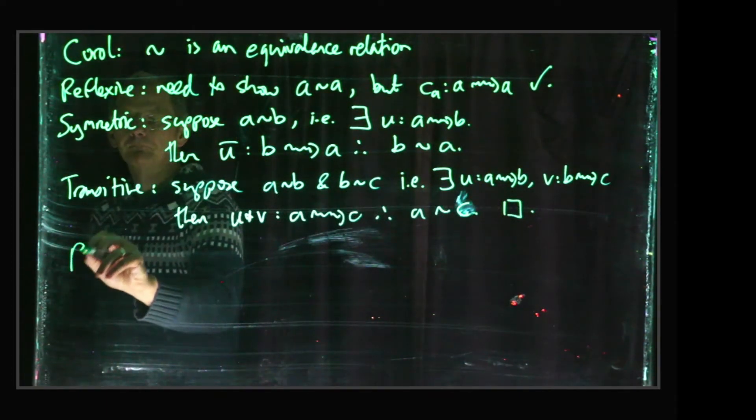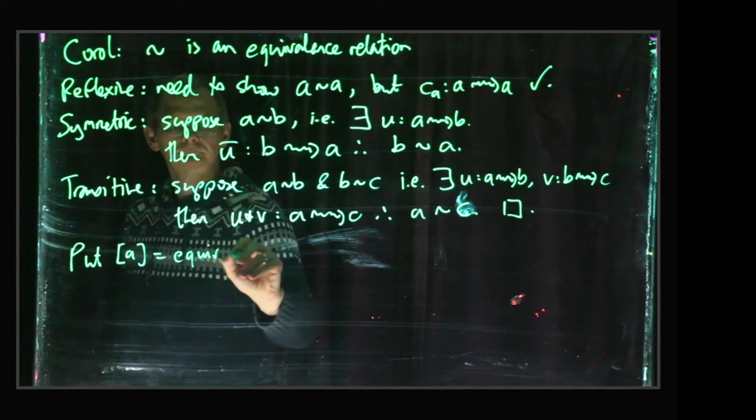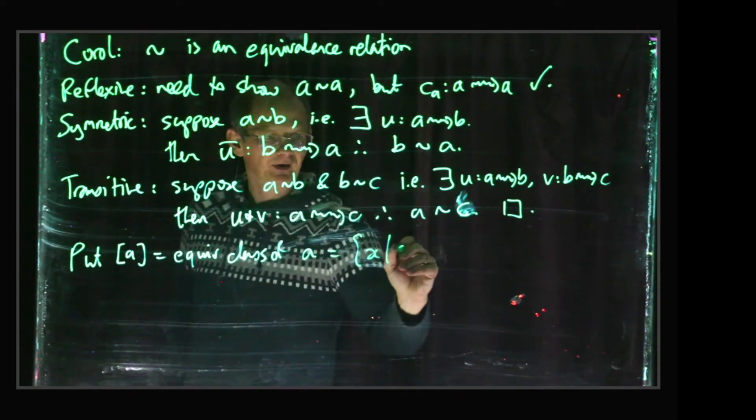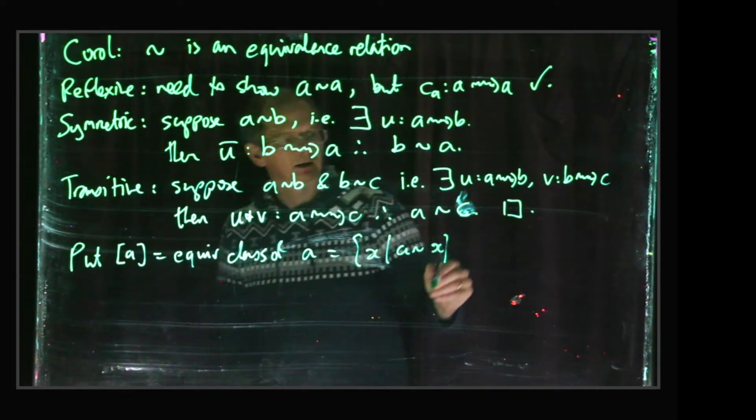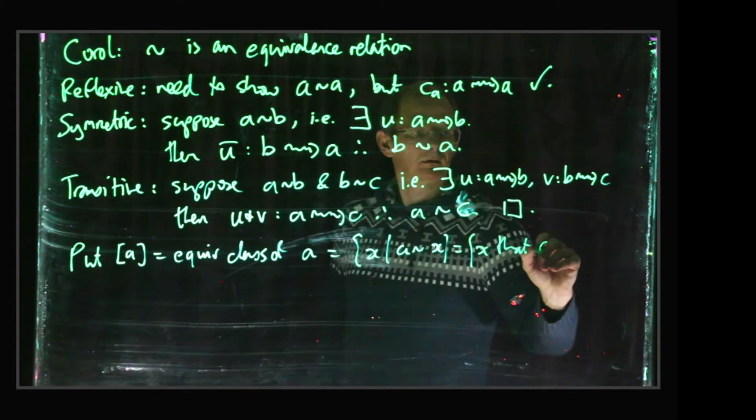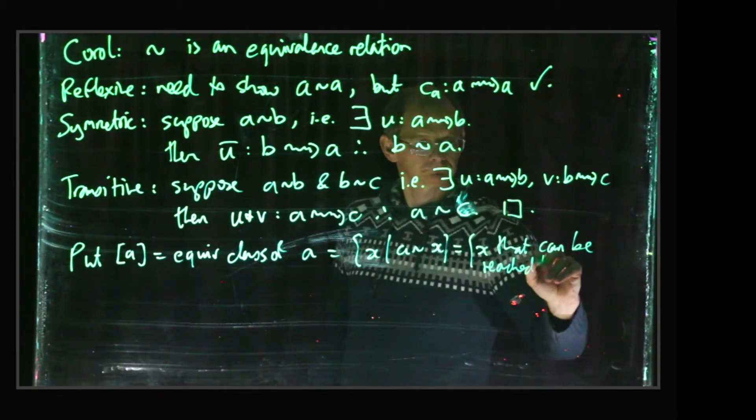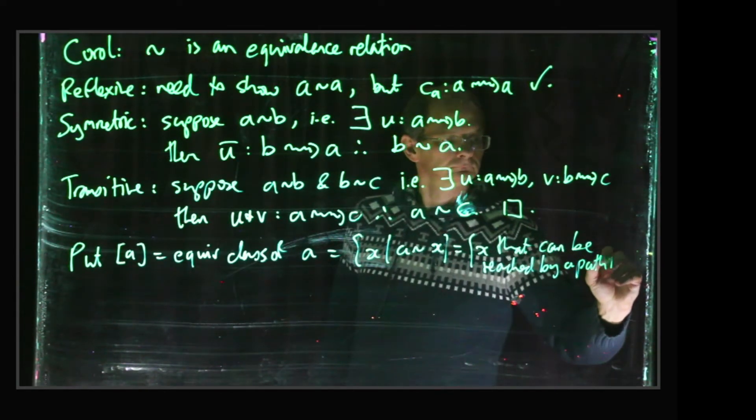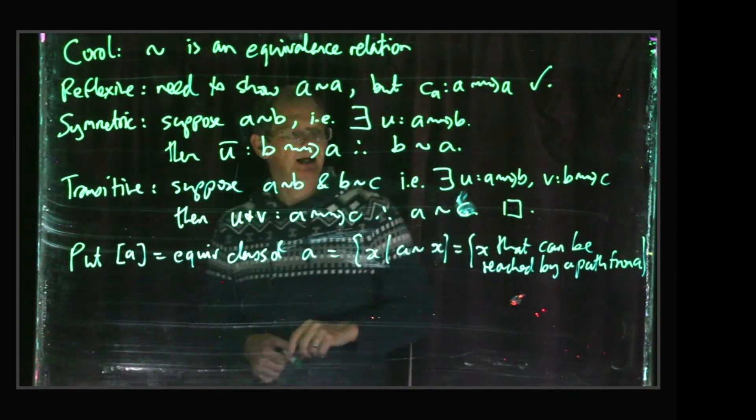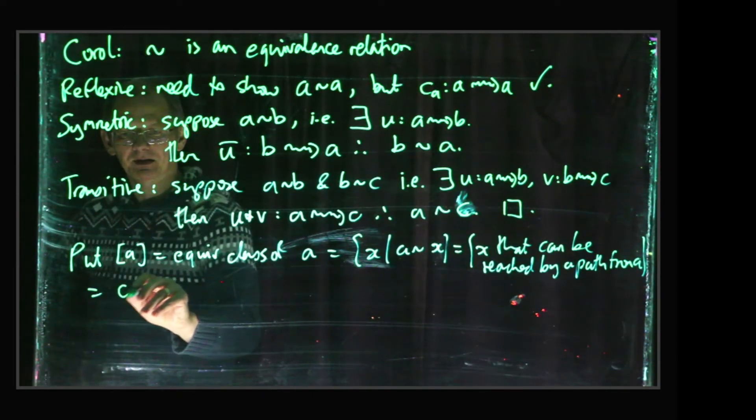And we put [A] is the equivalence class of A, which is the set of all x such that A ~ x. So in other words, that's just the set of all points that can be reached by a path from A.